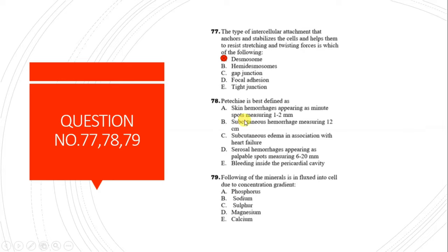Question 78: Petechiae are best defined as skin hemorrhages appearing as minute spots measuring one to two millimeters. This can be caused by deficiency of platelets in thrombocytopenia.